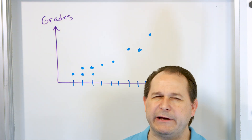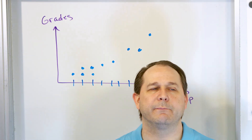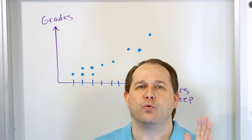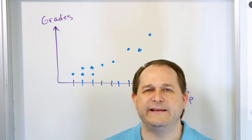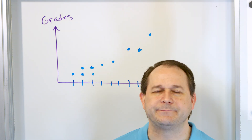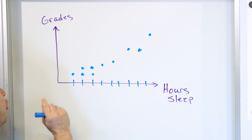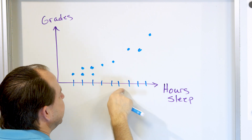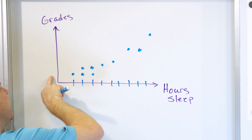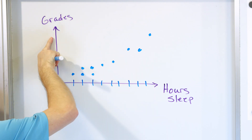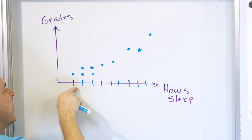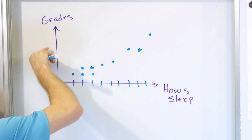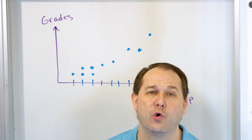That kind of makes sense — I think we could all probably agree that in real life, this is plausible. Now we want to talk about: are these data correlated or not? When it's correlated, all it means is that if you increase one of the data — the number of hours of sleep — is there a corresponding increase in the other data? And it appears in this case there is. As the number of hours of sleep goes up, the grades go up. So we say that's positive correlation.